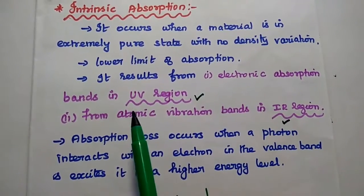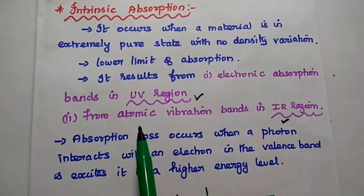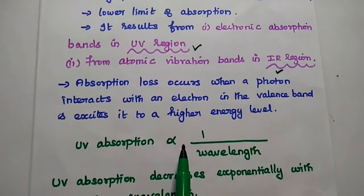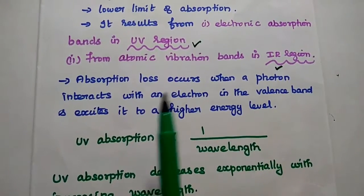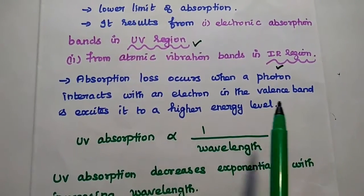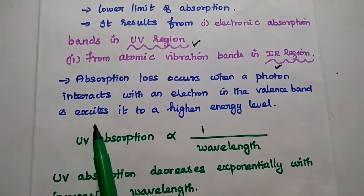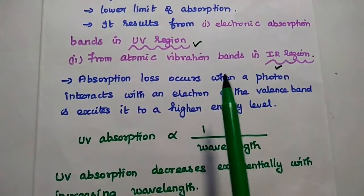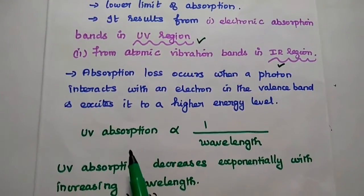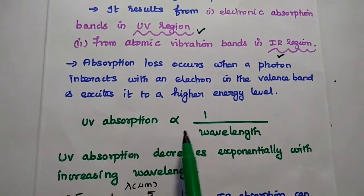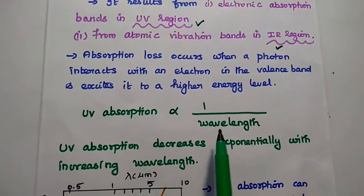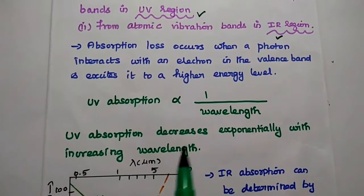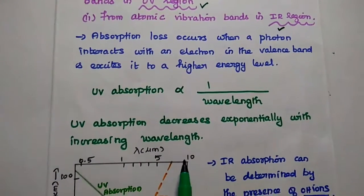Electronic absorption bands in UV range and atomic vibration bands in IR range. The absorption loss occurs when a photon interacts with an electron in the valence band and excites it to the higher energy level under this UV range. UV absorption is inversely proportional to wavelength. That means, UV absorption decreases exponentially with increasing wavelength.